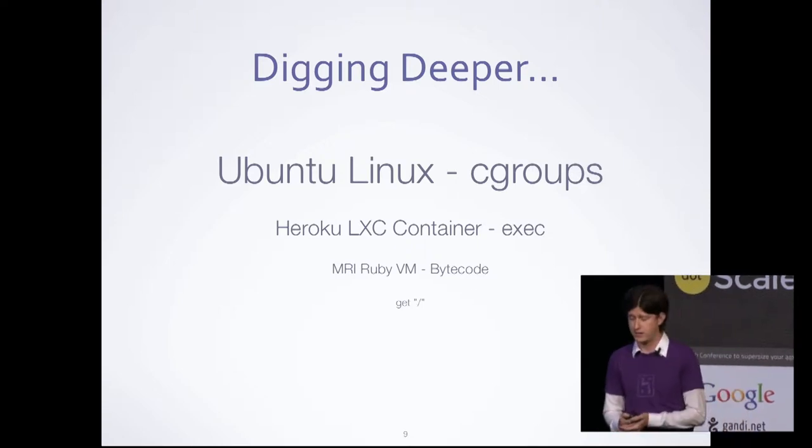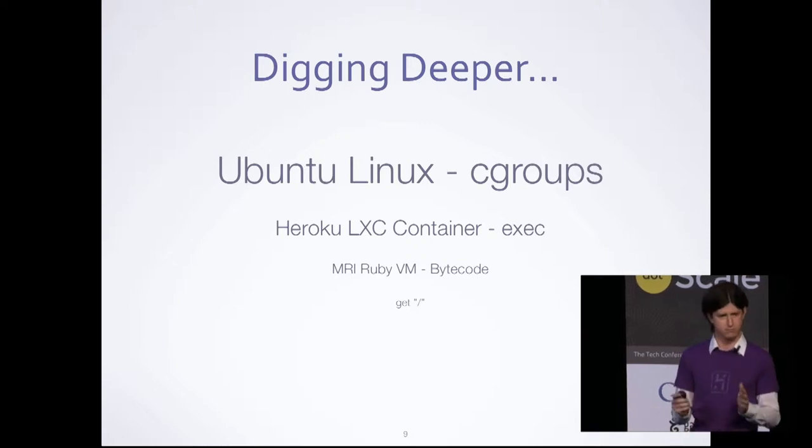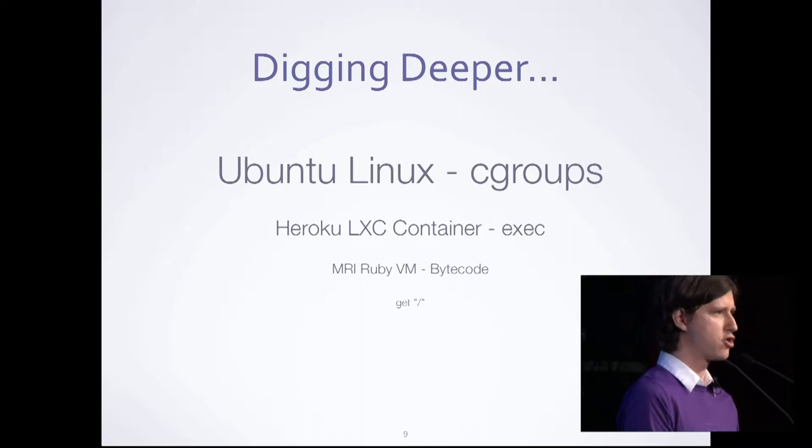Moving further down the stack, the LXC container is running in an operating system. We happen to use Ubuntu at Heroku, a very popular Linux distribution. Ubuntu makes a user space — the actual libraries, files, and binaries exposed to you and your VM to use: versions of libc, versions of libpq for your database. On the execution front, Ubuntu and the Linux kernel give you cgroups — control groups. This is a very explicit application of this metaphor: the kernel has control and exposes primitives for you to modify and put different processes in different groups.